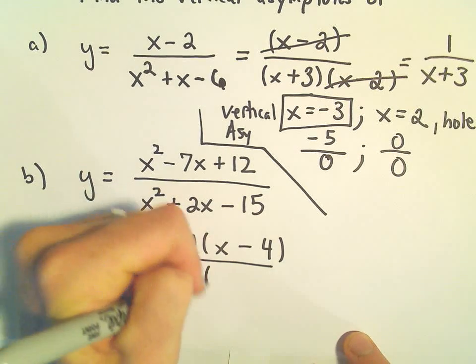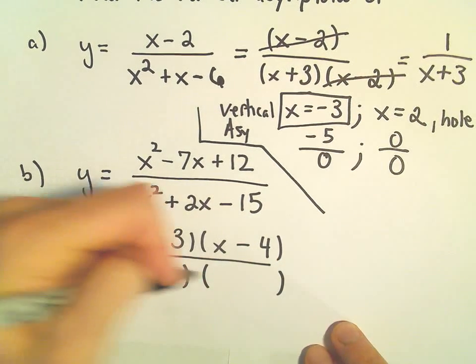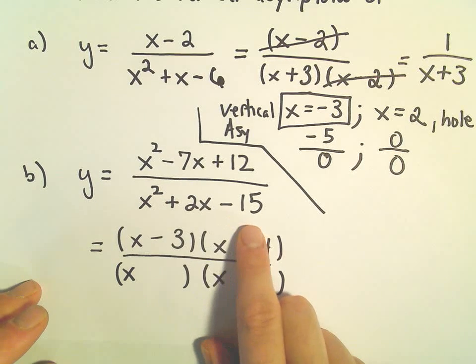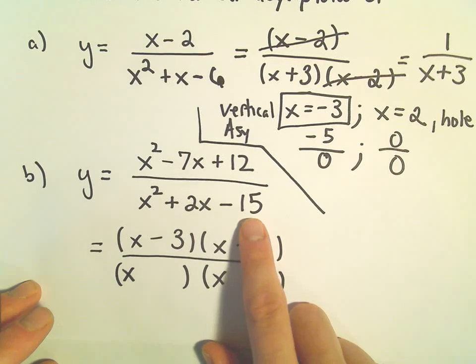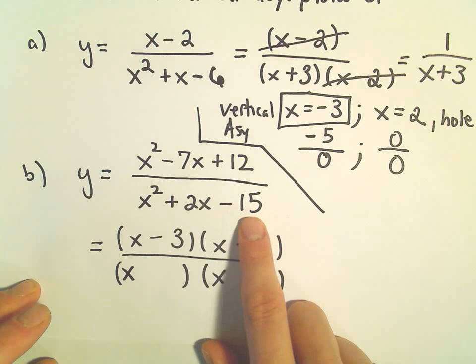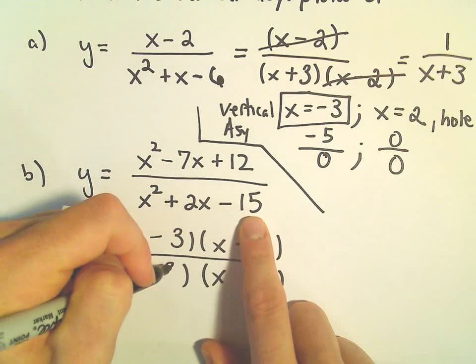So x and x. So two numbers that multiply to negative 15 but add up to positive 2. I think, let's see, so 1 and 15 doesn't work. How about some combination of 3 and 5?